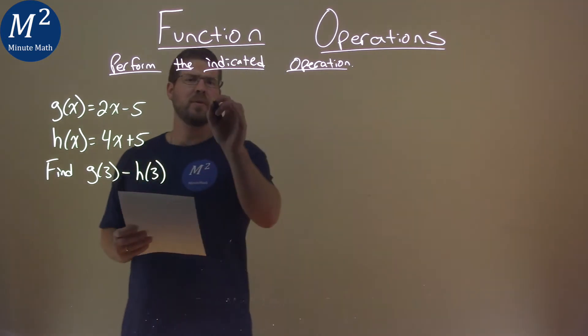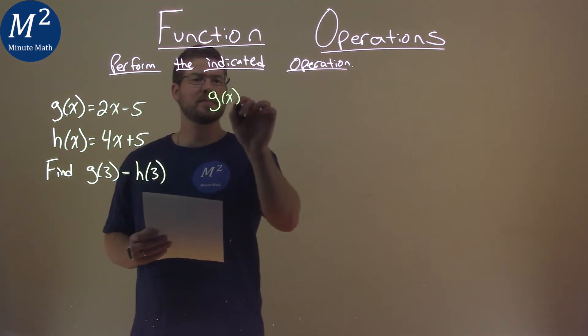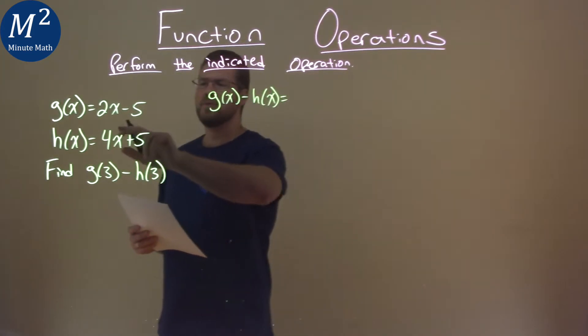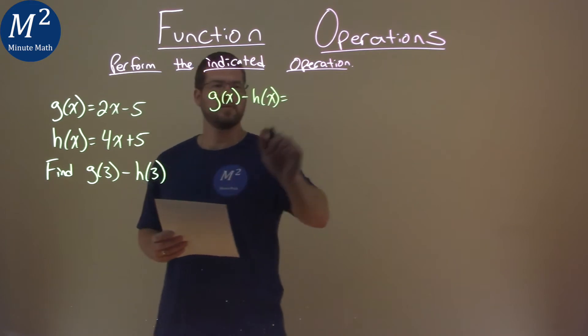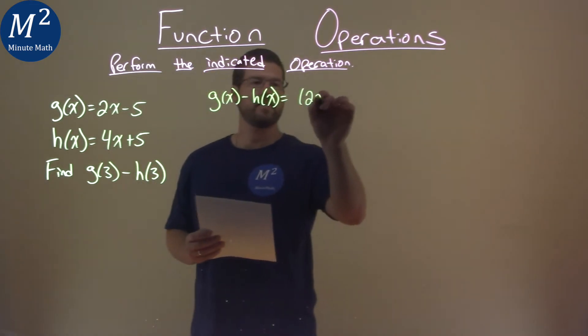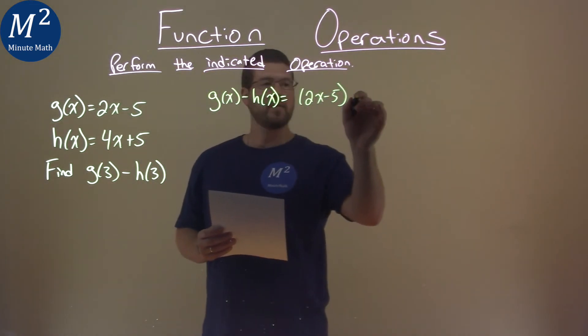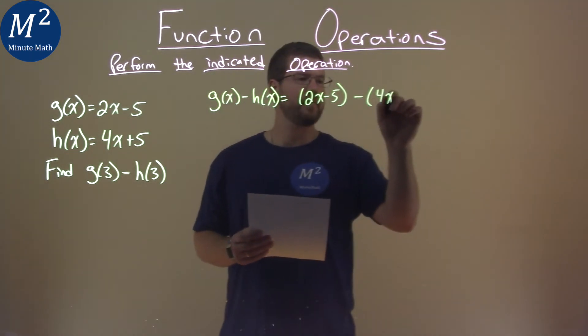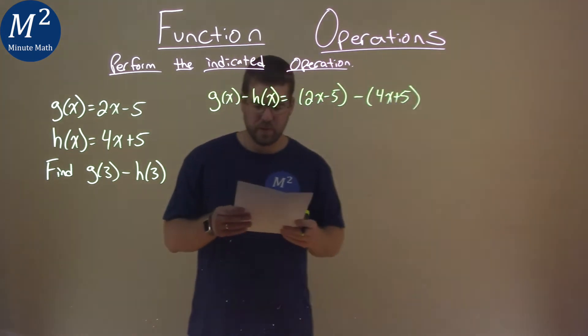Well, first thing I want to do is, what's g of x minus h of x? And that's just taking our two equations here, g of x being 2x minus 5, and we want to subtract that by h of x, 4x plus 5.